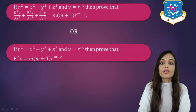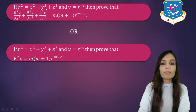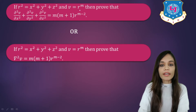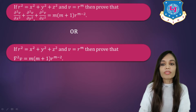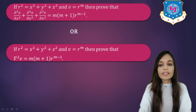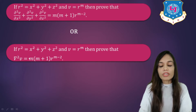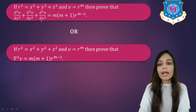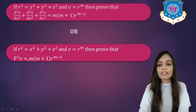Let us begin with the first example. If r square is equal to x square plus y square plus z square and v is equal to r raise to m, then we have to prove that del square v upon del x square plus del square v upon del y square plus del square v upon del z square is equal to m into m plus 1 into r raise to m minus 2. Or the question can be asked using the del squared notation, del square v equal to m into m plus 1 into r raise to m minus 2.